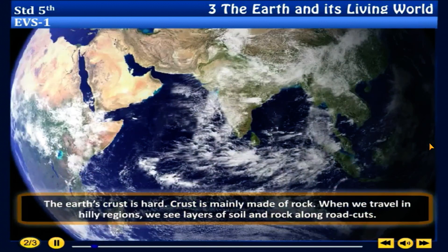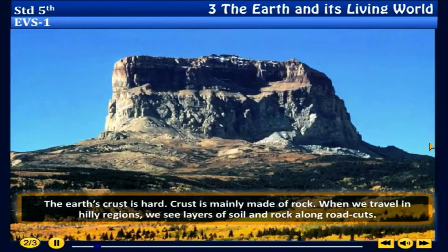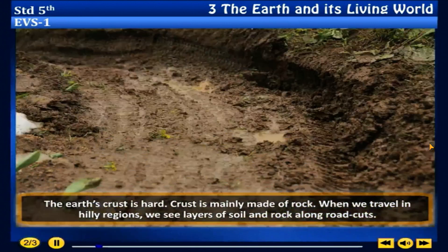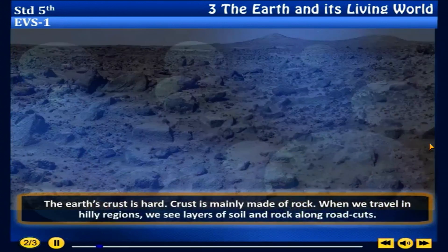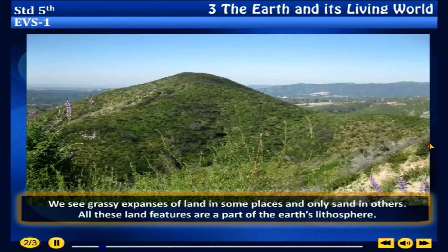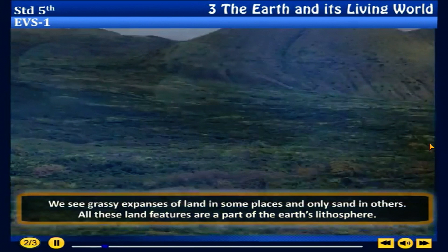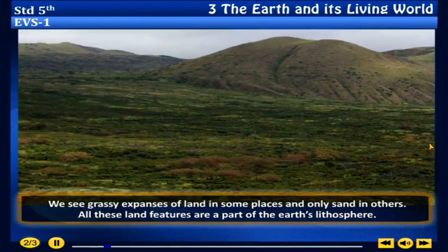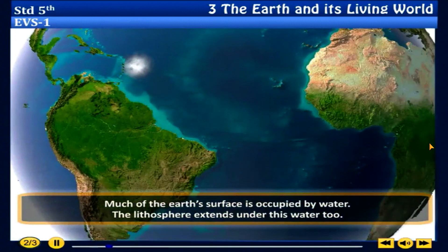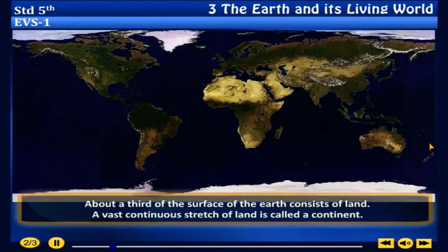The earth's crust is hot and is mainly made of rock. When we travel in hilly regions we see layers of soil and rock along road cuts. We see grassy expanses of land in some places and only sand in others. All these land features are a part of the earth's lithosphere. Much of the earth's surface is occupied by water, and the lithosphere extends under this water too.